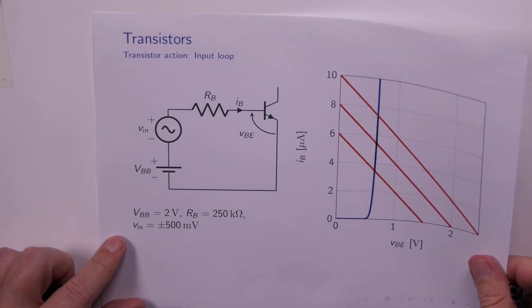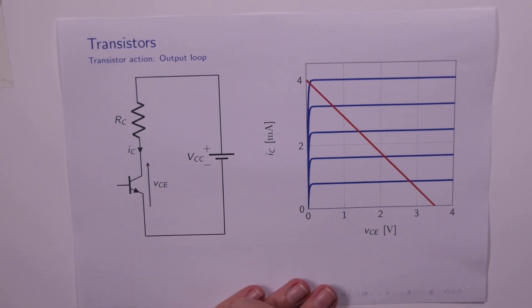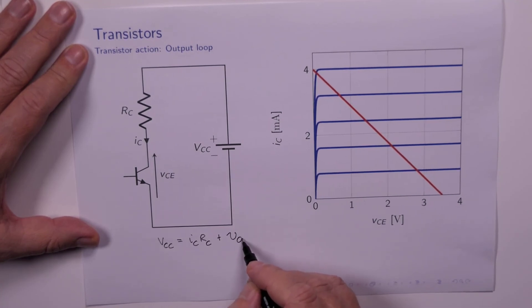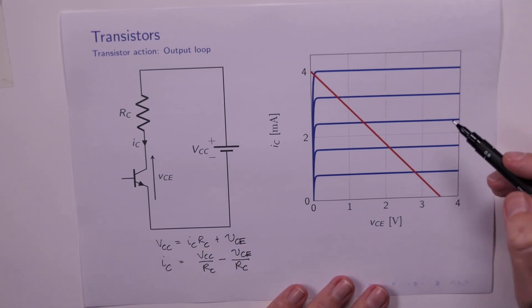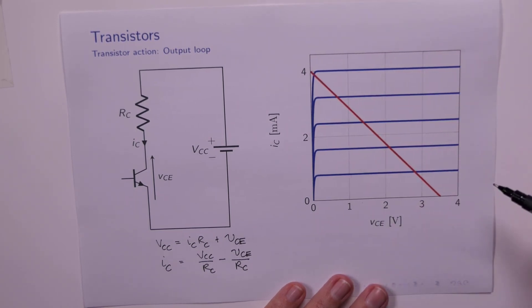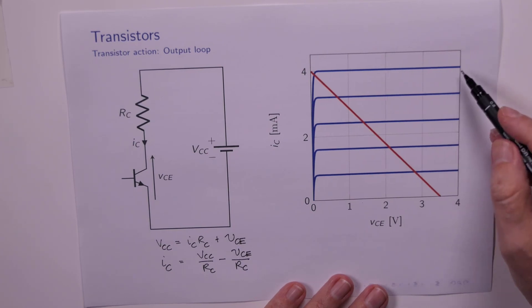Here's the output loop and I've suppressed the input loop because we're not interested in that. I can write an equation for the load line for the output loop. Because I know that VCC is equal to IC times RC plus VCE, and I can solve for IC. It's VCC over RC minus VCE over RC. When I plug in the values I discover that my intercepts are 4 milliamps and what looks like 3.5 volts. So here's the load line for the output loop, and superimposed on that is the family of curves for the transistor for a given value of IB.